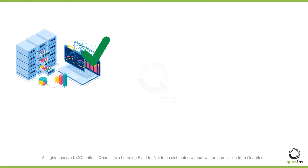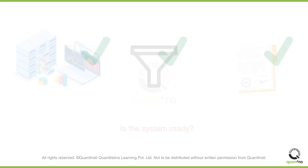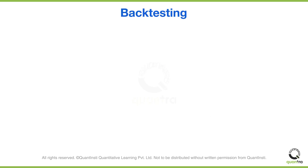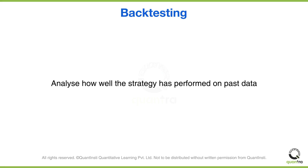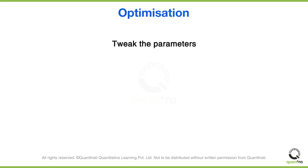Now your database is ready, you have your options filtered, and you've defined the trading rules — your system is essentially ready. But to build confidence in it, you backtest your strategy, which allows you to analyze how it performs on past data. You can evaluate performance with metrics like the Sharpe ratio, maximum drawdown, and variance. If there is scope for improvement, you can tweak parameters to maximize profit, minimize risk, or both — this process is called optimization.